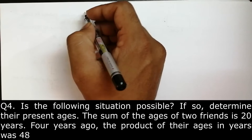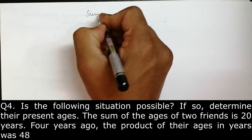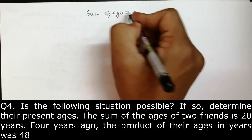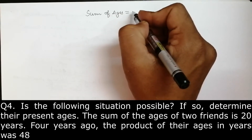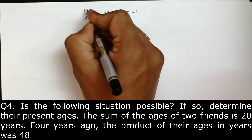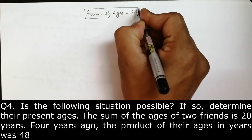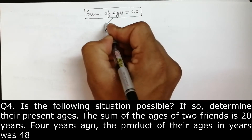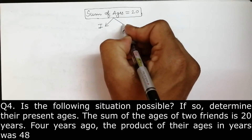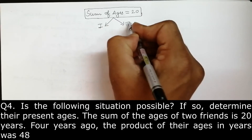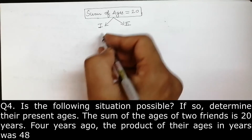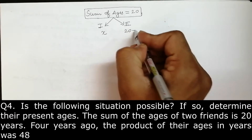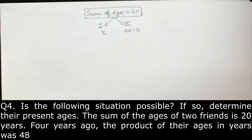So first, हम लोग पहली condition लिखेंगे — sum of ages is 20. तो यह sum of ages, दो friends का age है, उनका sum है 20. तो हम लोग consider करेंगे: this is your first friend and this is your second friend. तो अगर मैं first friend का age x लेता हूँ, तो दूसरे friend का age होगा 20 minus x, क्योंकि दोनों का sum 20 है।